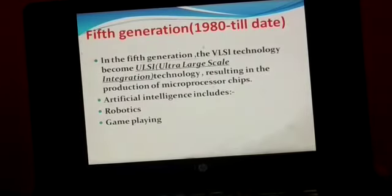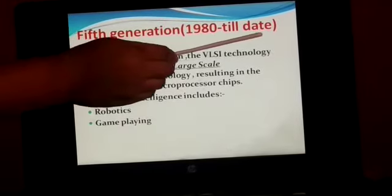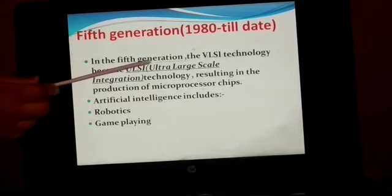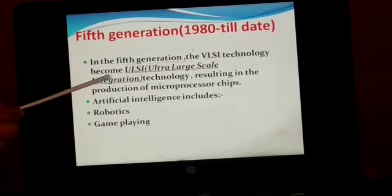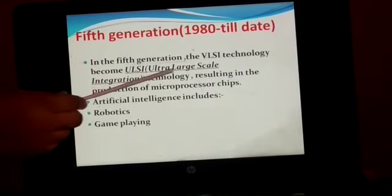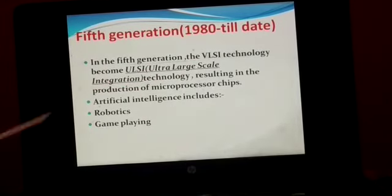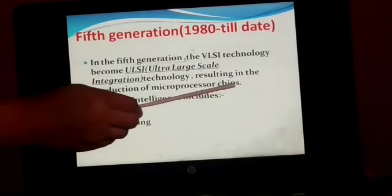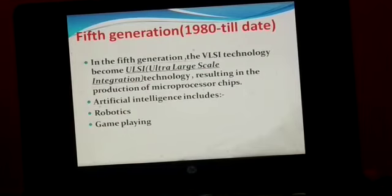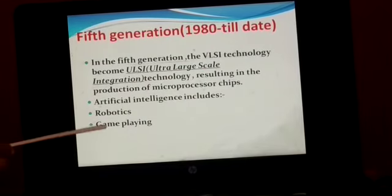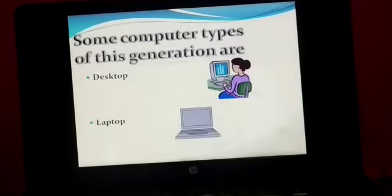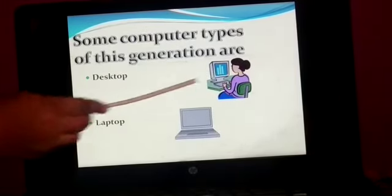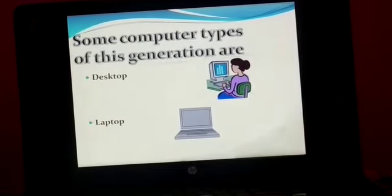Fifth generation. The period of the fifth generation is 1982 till date. In the fifth generation, VLSI technology became ULSI — Ultra Large Scale Integration technology — resulting in the production of microprocessor chips. Artificial intelligence was included, like robotics and game playing. Some computer types of this generation are desktop and laptop. Thank you.